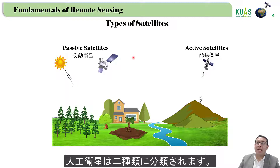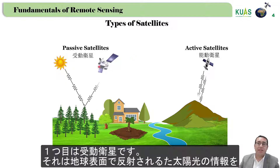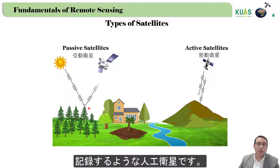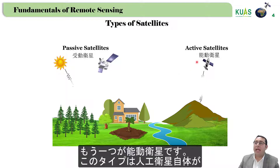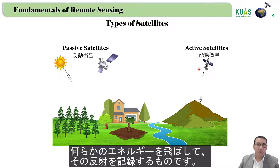We can classify satellites into two types. The first is a passive satellite, in which sunlight is reflected from the surface of the Earth and the reflected light is recorded by the satellite. In an active satellite, the satellite itself emits some energy and receives that energy back.